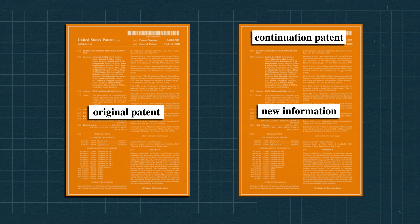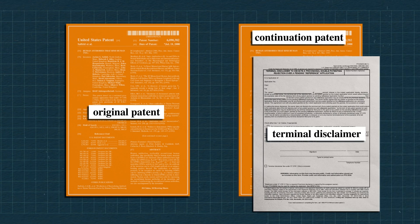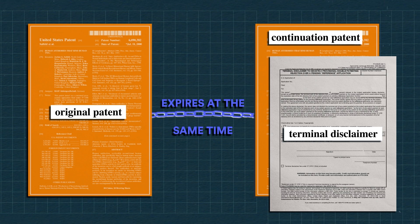So AbbVie can get a continuation patent on this new information, even though it might be obvious, as long as it has a terminal disclaimer, a separate document that promises this continuation patent will expire at the same time as the original patent it's linked to. This continuation patent basically just broadens the language of the claims made in the original patent.